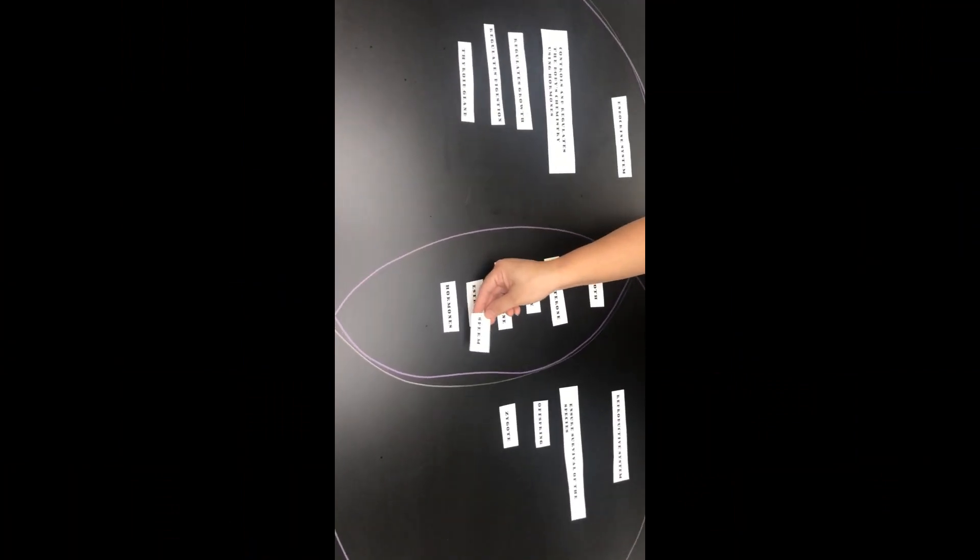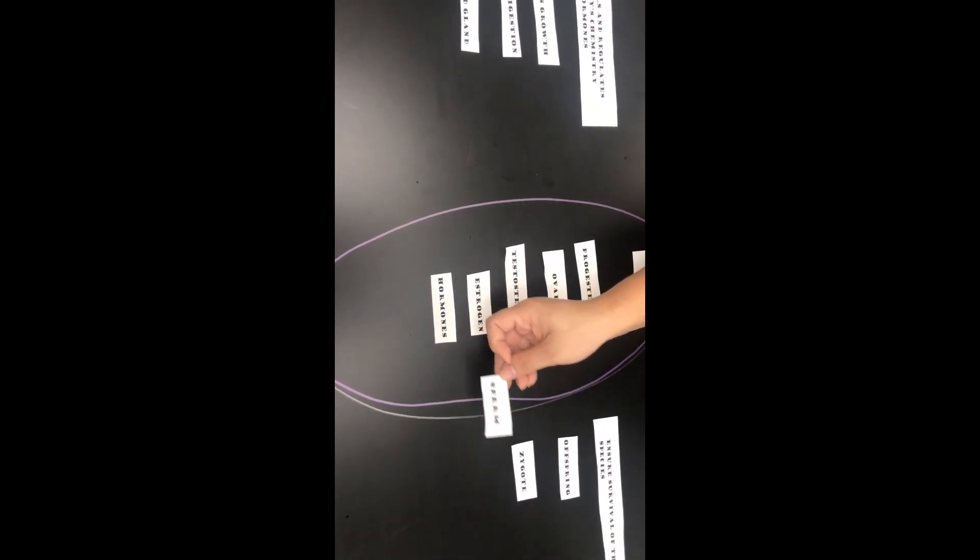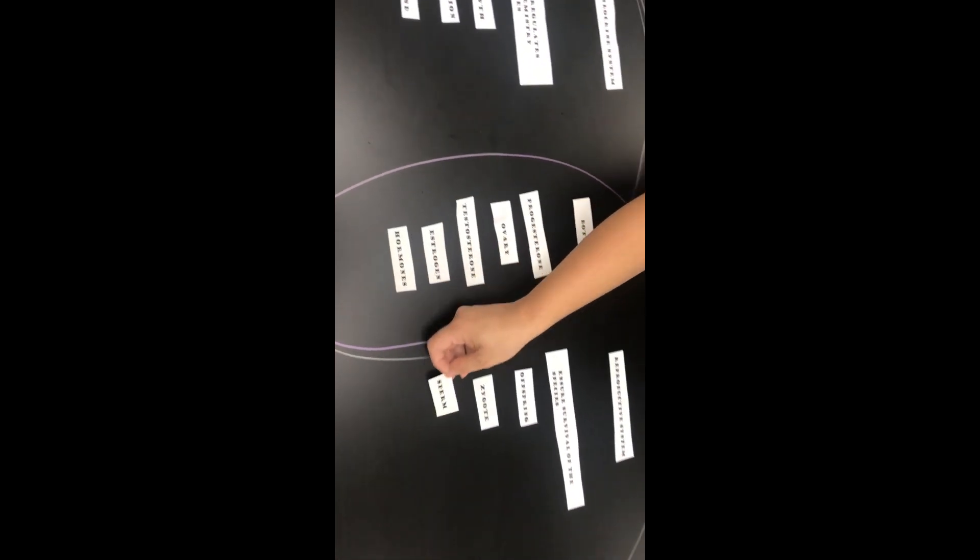The next one is sperm. Remember, sperm is produced by the testes. They are the male gametes. So that goes under the reproductive system.